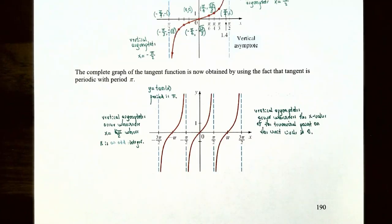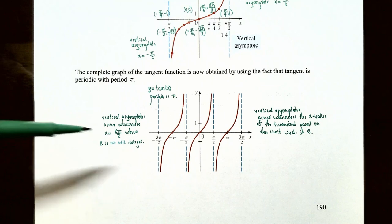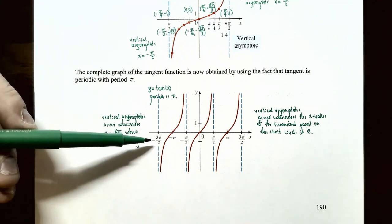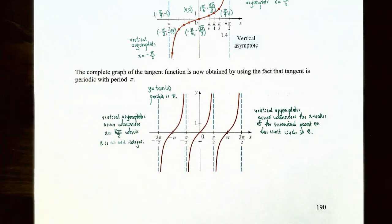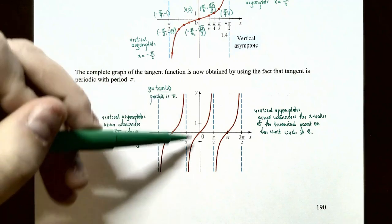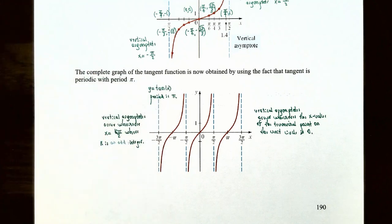Since this is one complete period of the tangent function between x = −π/2 and x = π/2, the graph repeats to the left and to the right. Vertical asymptotes occur whenever x = kπ/2 where k is an odd integer — at x = −3π/2, −π/2, π/2, 3π/2, and so on. They occur whenever the x-coordinate of the terminal point on the unit circle is 0. The graph has the same pattern every π radians, decreasing without bound approaching a left asymptote and increasing without bound approaching a right asymptote. The period of y = tan(x) is π.